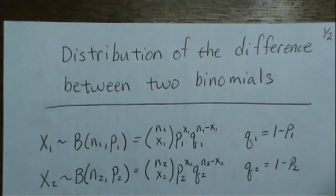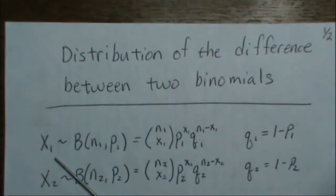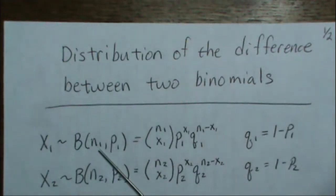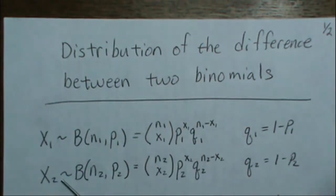In this video we're going to derive the distribution of the difference between two binomials in two different ways and show that the results are equivalent. Here we're going to let one sample be binomial with parameters N1 and P1. Q is 1 minus P. Second sample is from a binomial N2, P2. That's the density.